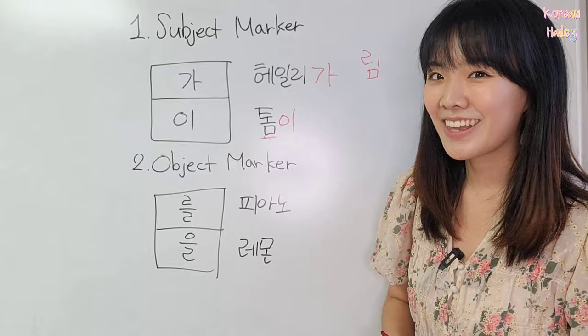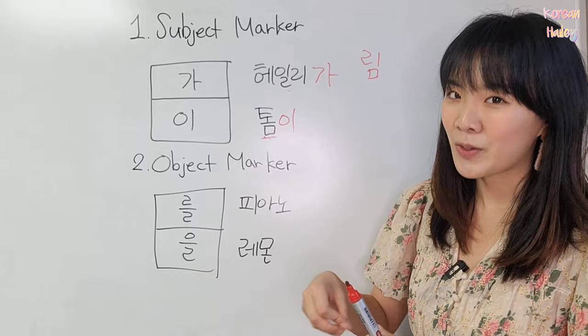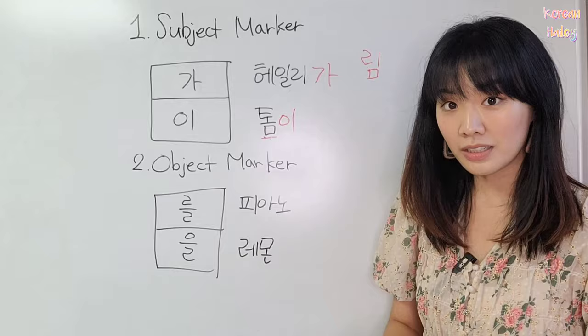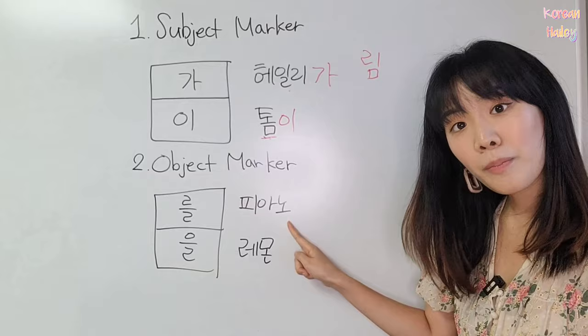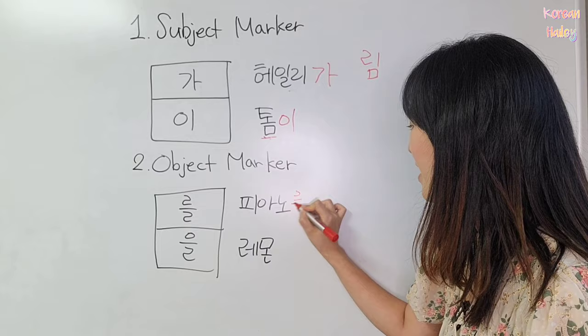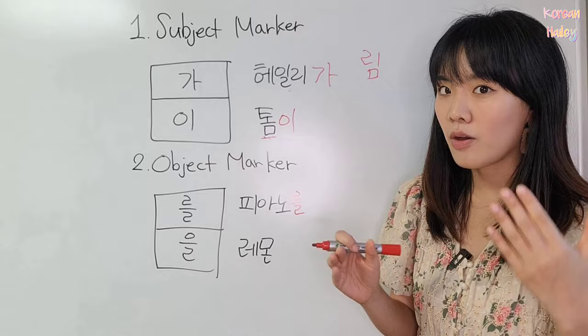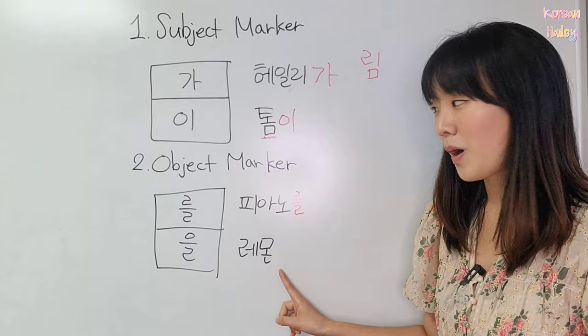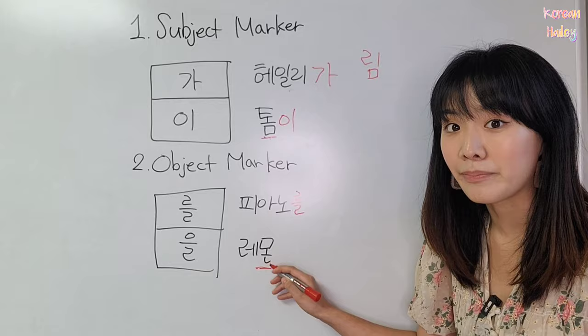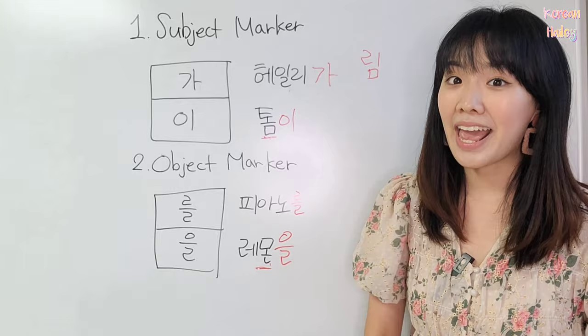Now the object marker. 피아노 is piano, and 레몬 is lemon. Let's make these into objects. You put the object marker: 를 or 을. Look at 피아노 — is there a 받침? No, there is no 받침, no final consonant. So we put 를: 피아노를, and it becomes the object. Now for 레몬 — the last syllable has 받침, a final consonant. In that case, you put 을: 레몬을.